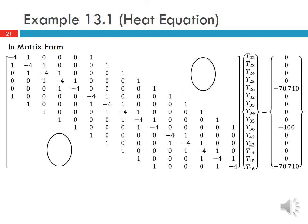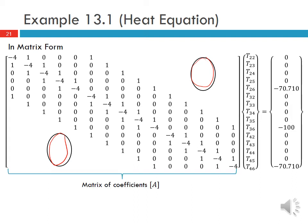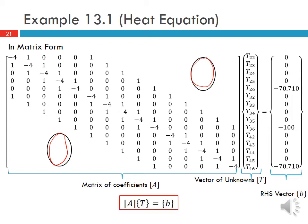If we do this for all interior points, we get a matrix equation with a very nice banded matrix, where the large zero blocks denote zeros in both corners. This is the matrix of coefficients A, the vector of unknowns T, and the right-hand side vector b, giving the matrix equation AT = b. With this grid spacing, A is a 15x15 matrix and T and b are both 15x1, since there are 15 unknowns for all the interior points.